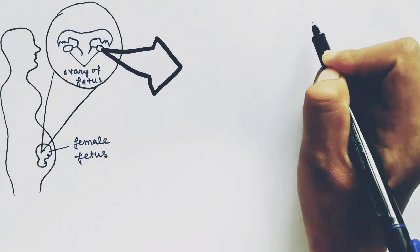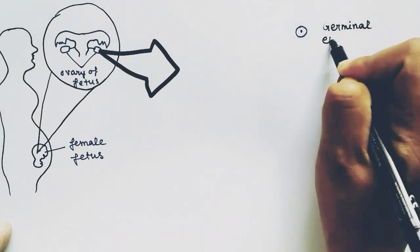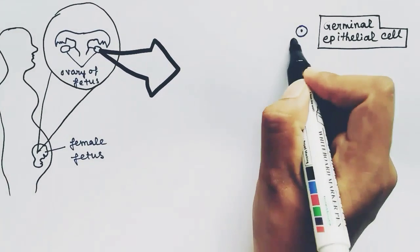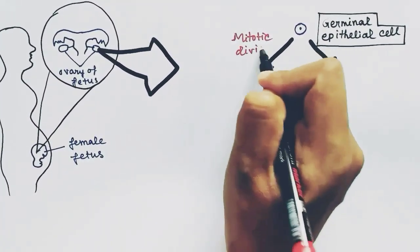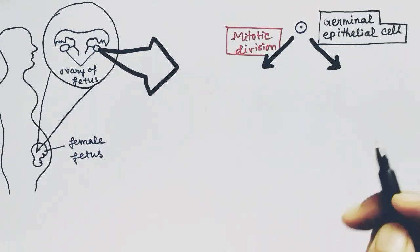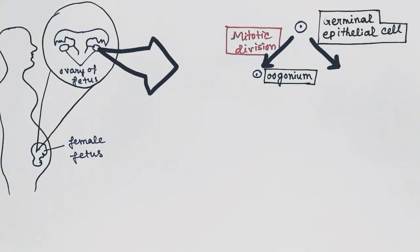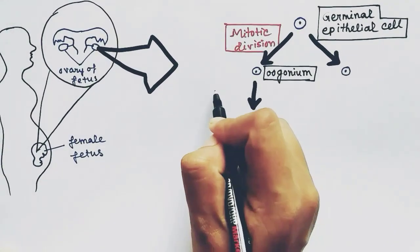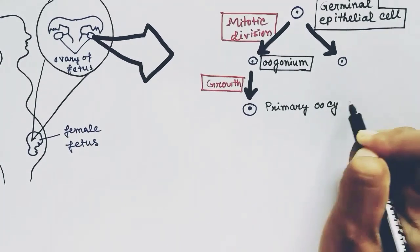In the ovaries of the female fetus, the germinal epithelial cells inside the ovary wall start dividing by mitotic cell division and form oogonia. These oogonia cells go through a growth phase and form the primary oocyte inside the ovary of the female fetus.